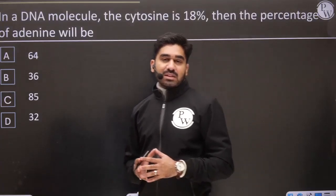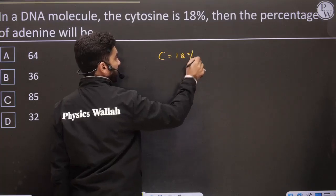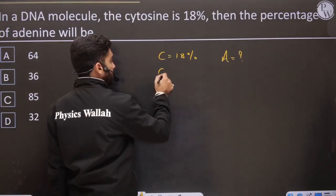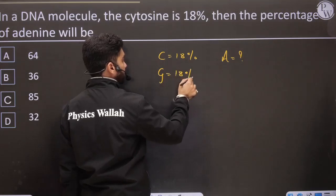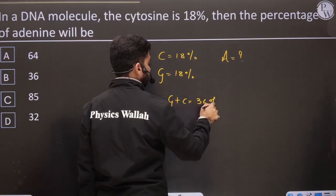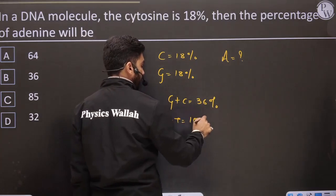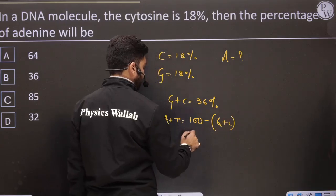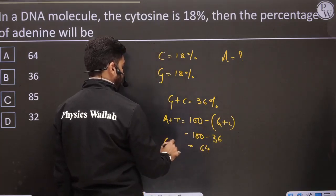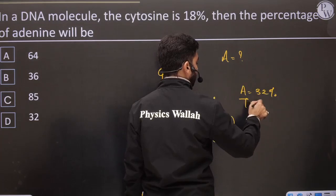Next: in a DNA molecule, cytosine is 18%. We need to calculate the percentage of adenine. By Chargaff's rule, if cytosine is 18%, then guanine is also 18%. G + C together = 36%. Remaining A + T = 100 - 36 = 64%. So adenine alone = 32% and thymine alone = 32%.